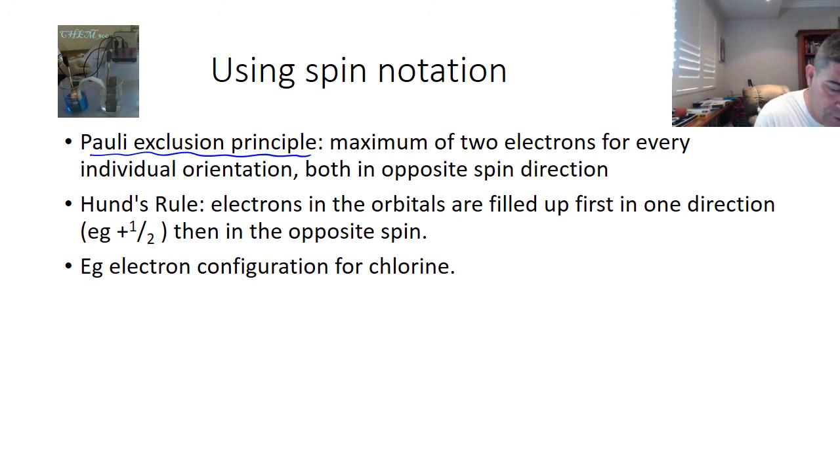The second important one is Hund's rule. And Hund's rule is about electrons in the orbitals being filled up first in one direction, the plus a half direction or the minus a half direction, and then in the opposite direction. So all of this probably doesn't make too much sense at the moment, but let's have a look at our two versions of chlorine.